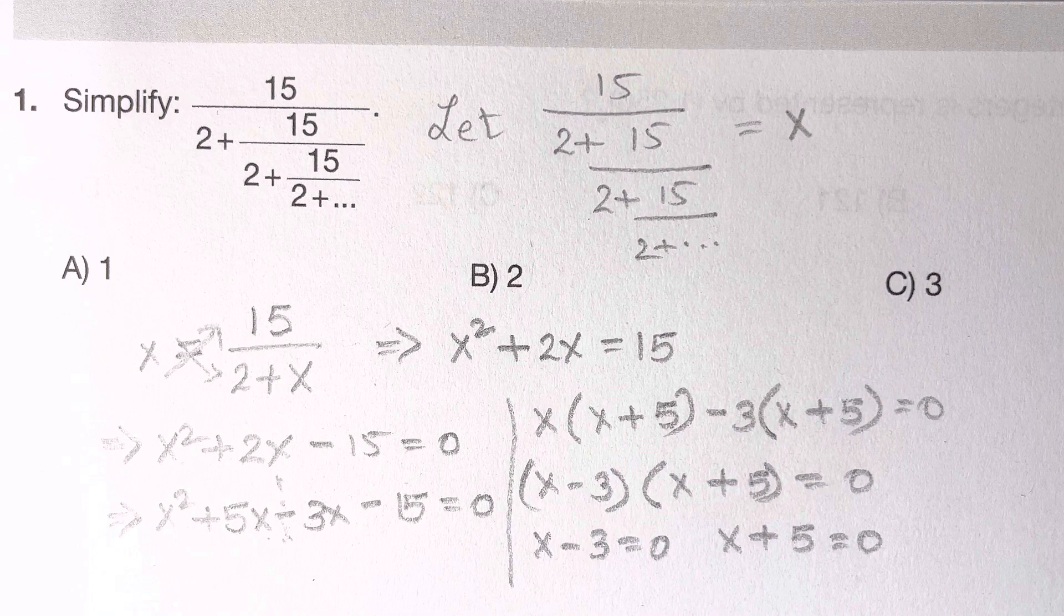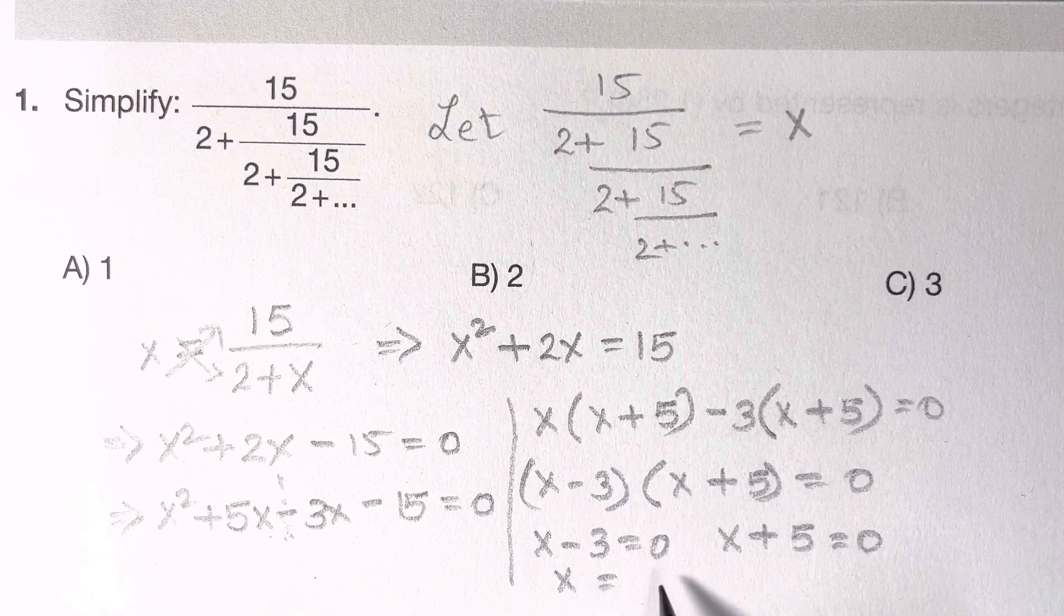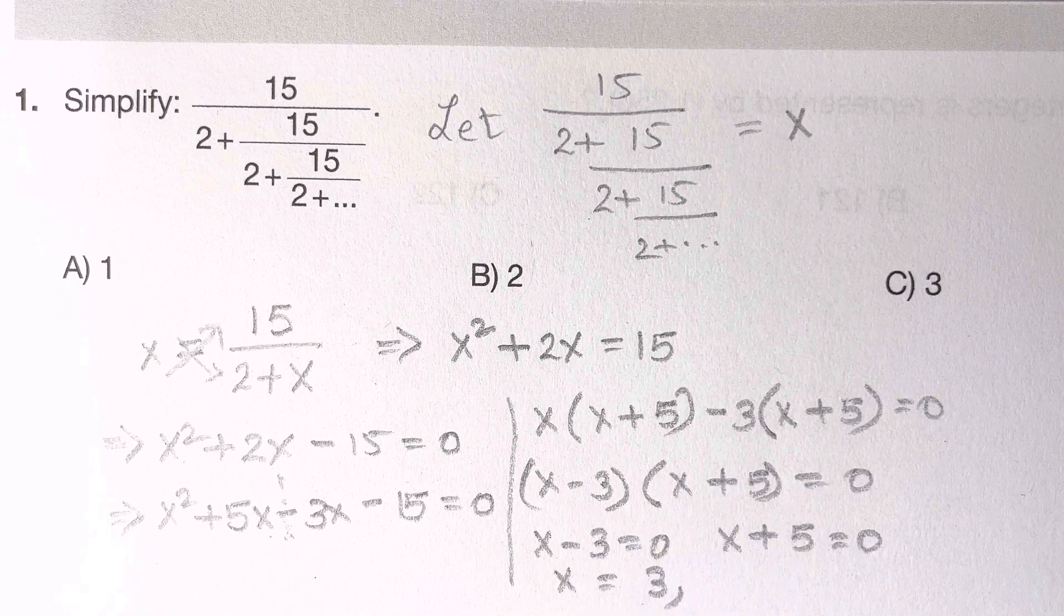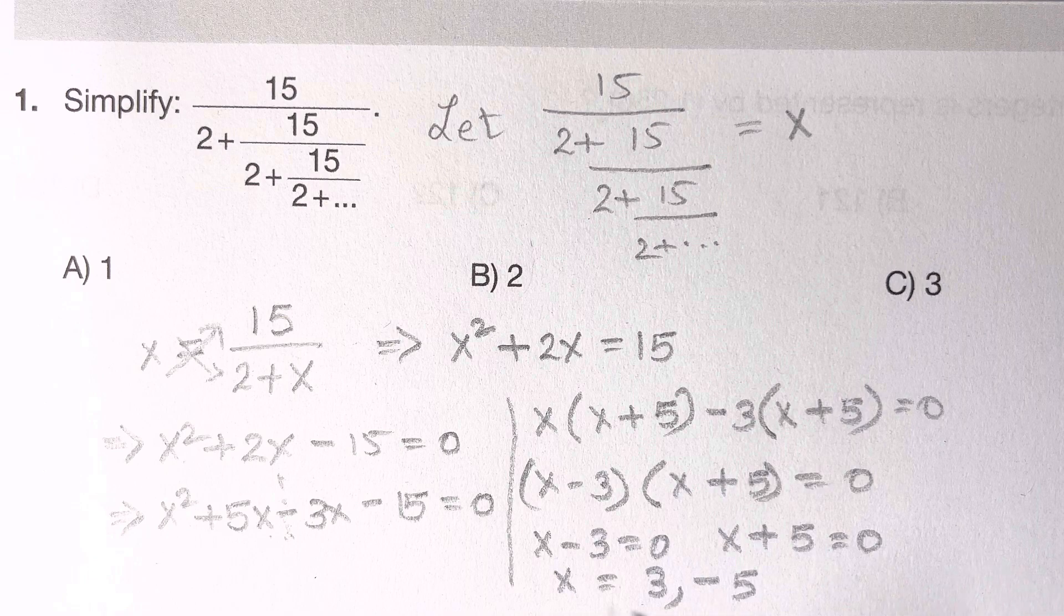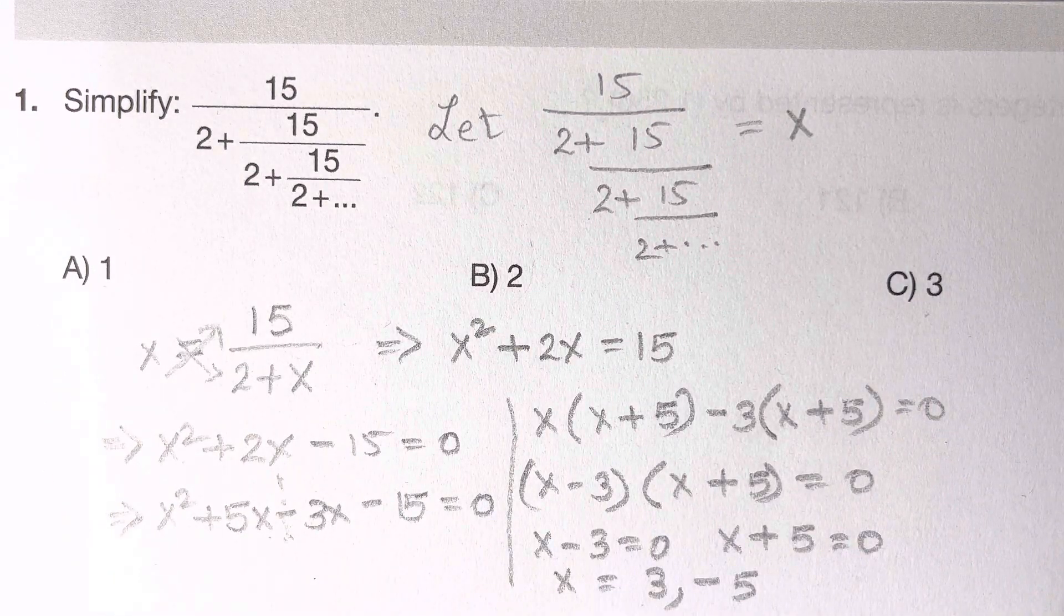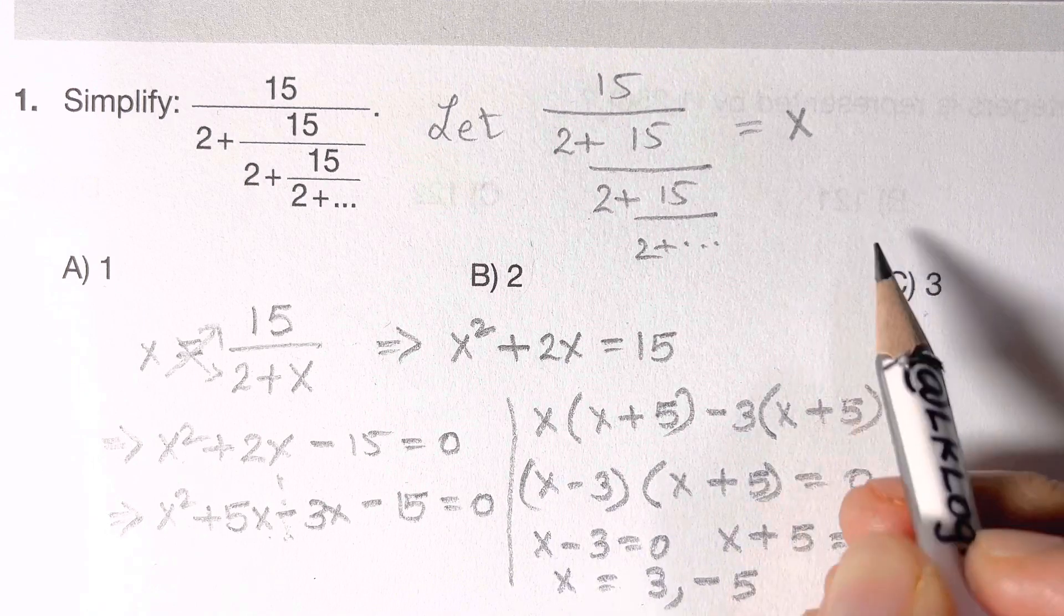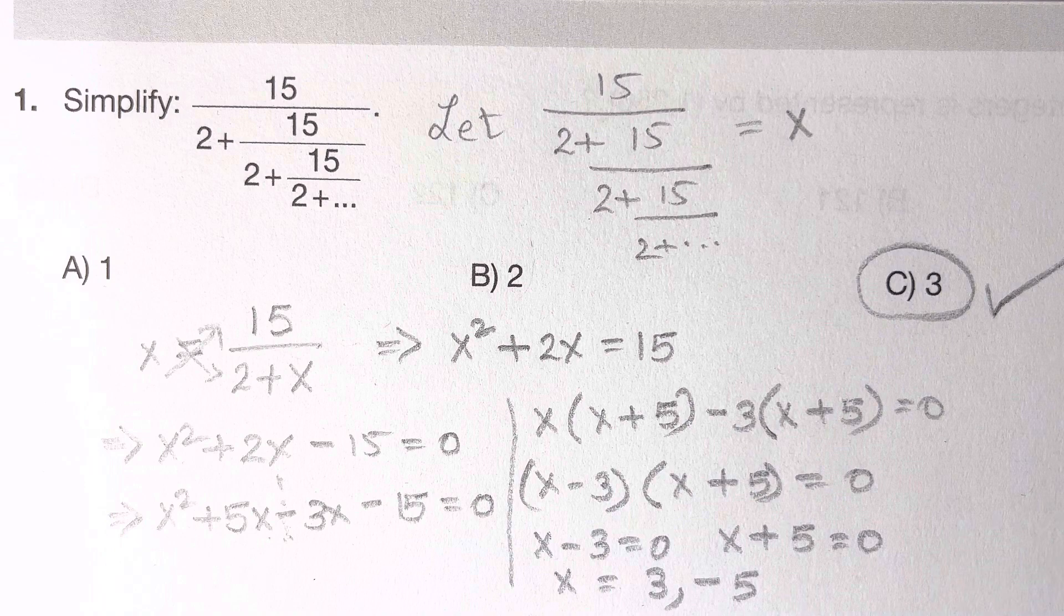Here in our choices we have 1, 2, 3, and 5. We don't have negative 5, so we're going to choose option C, that's right.